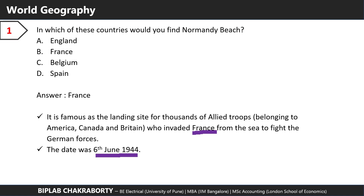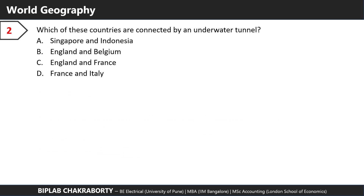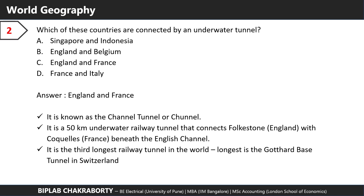The date of the landing was 6th of June 1944. Which of these countries are connected by an underwater tunnel? The answer is England and France. The tunnel is known as the Channel Tunnel or Chunnel. It's a 50-kilometer underwater railway tunnel that connects Folkestone in England with Calais in France beneath the English Channel.